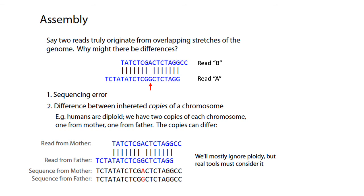The second source of differences is in differences between the inherited copies of chromosomes. Humans are diploid — we have two copies of every chromosome. If you have a SNP or single nucleotide variant that differs between the maternal and paternal chromosomes, then that's going to manifest itself as sequence differences at that particular position in read A and B, and all other reads that map to that same locus.